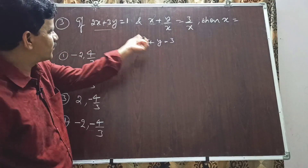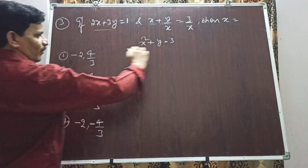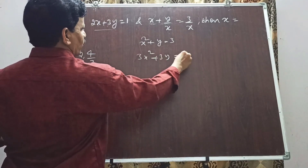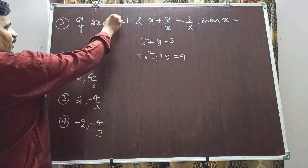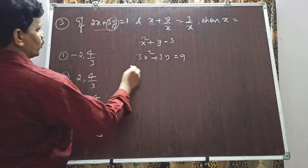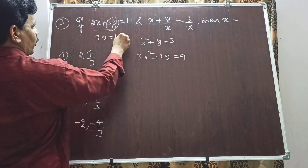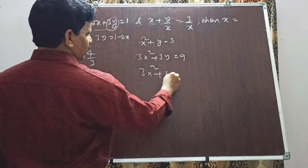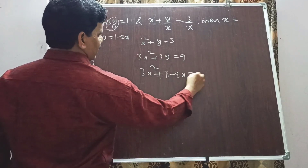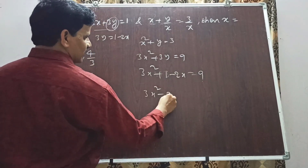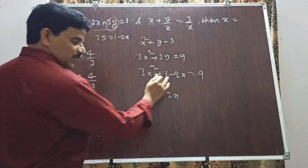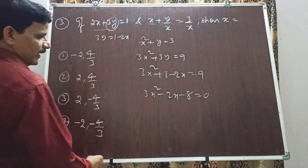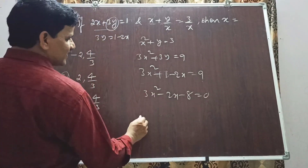Multiply x² + y = 3 by 3 to get 3x² + 3y = 9. From the first equation 2x + 3y = 1, we get 3y = 1 - 2x. Substituting: 3x² + (1 - 2x) = 9, which gives 3x² - 2x + 1 - 9 = 0, so 3x² - 2x - 8 = 0.